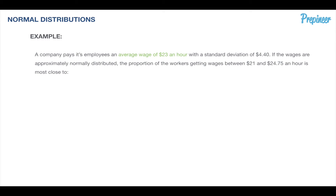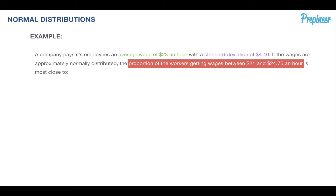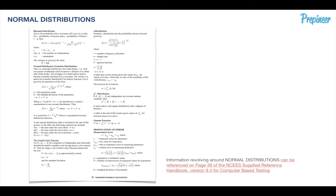We're told that the average wage is $23 that this company pays, and we know there's a standard deviation of $4.40. We're asked what the proportion of employees that work at this company will fall between some specified range, which is highlighted on your screen.